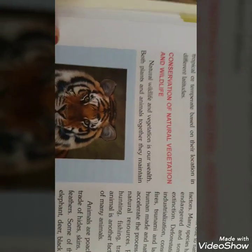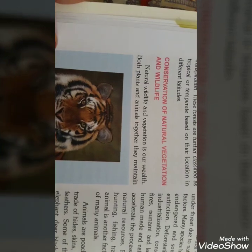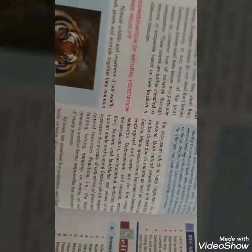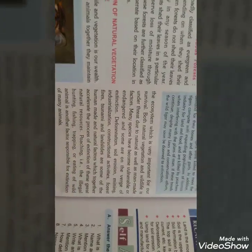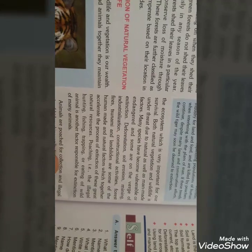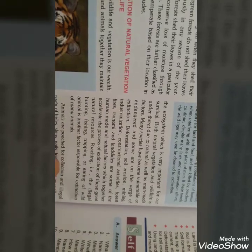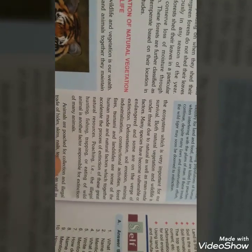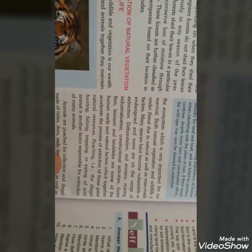Conservation of natural vegetation and wildlife — both plants and animals are very important parts of our ecosystem. Natural vegetation and wildlife face danger from man-made and natural factors such as deforestation, soil erosion, mining, industrialization, construction activities, forest fire, tsunami and landslides.